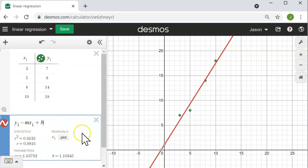Desmos provides some nice analytics about the regression process. We see the correlation coefficient and we can actually plot the residuals as well.